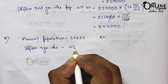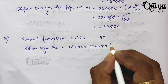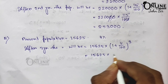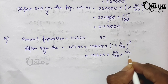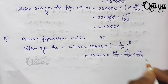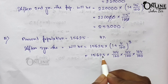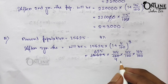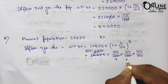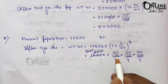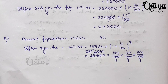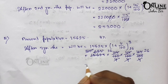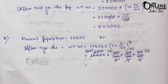After three years, the population will be 15,625 into (1 + 4/100) to the power 3, which is 15,625 into 104/100 into 104/100 into 104/100. Dividing 15,625 by 25 gives 625, and cancelling with the hundreds gives us 625 into (104/4) three times. Since 104/4 = 26, we get 26 into 26 into 26, which equals 17,576.